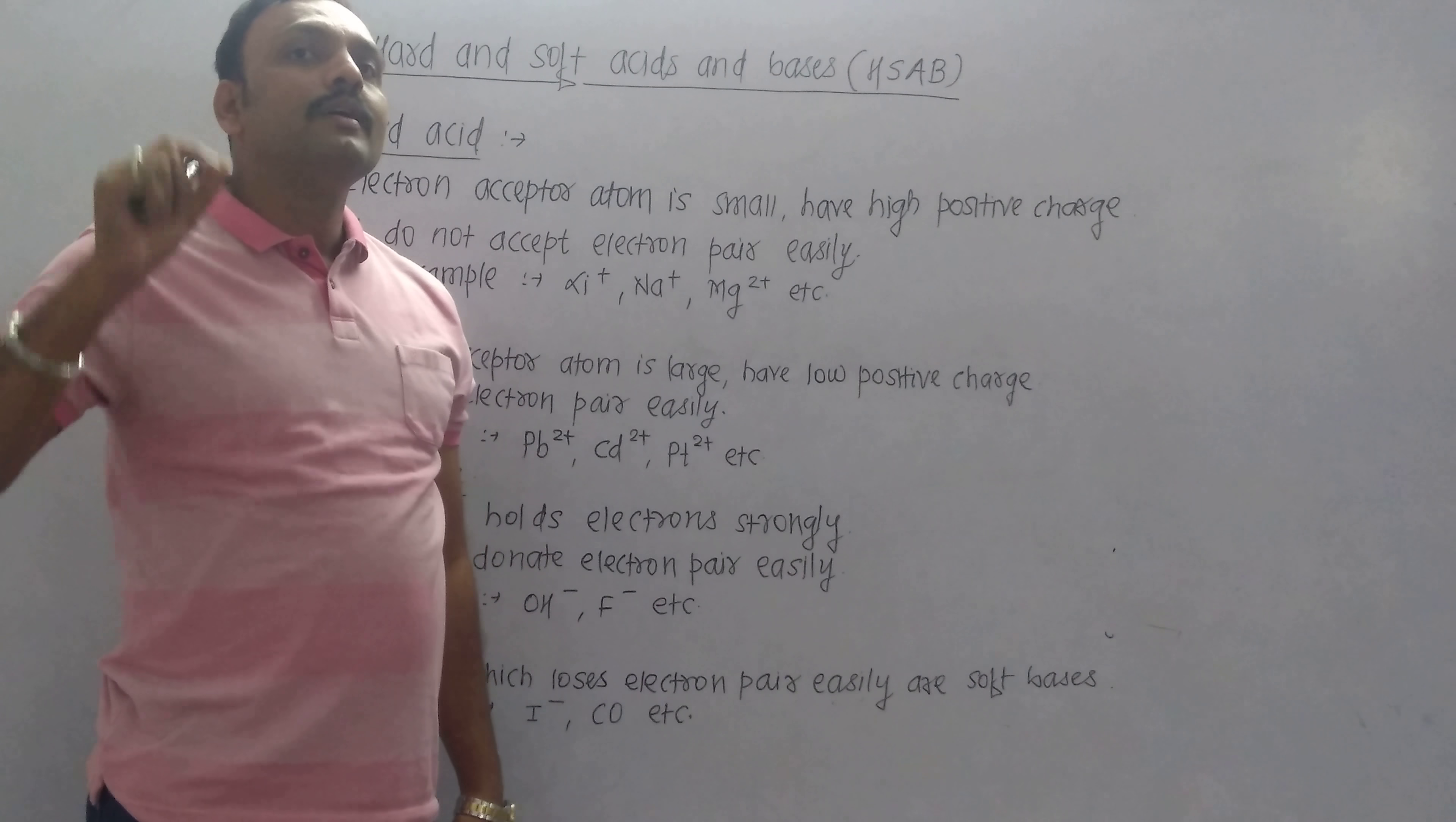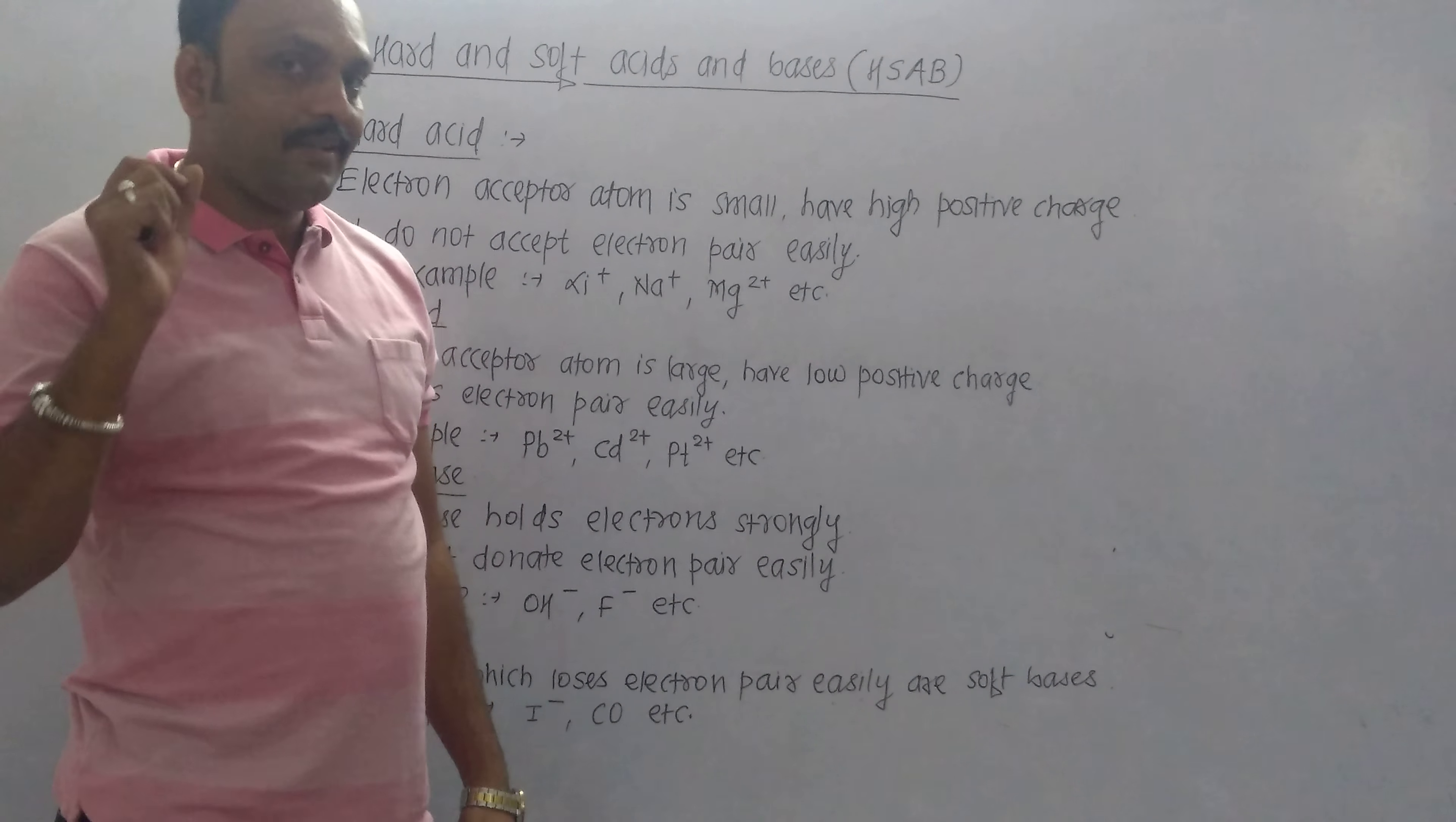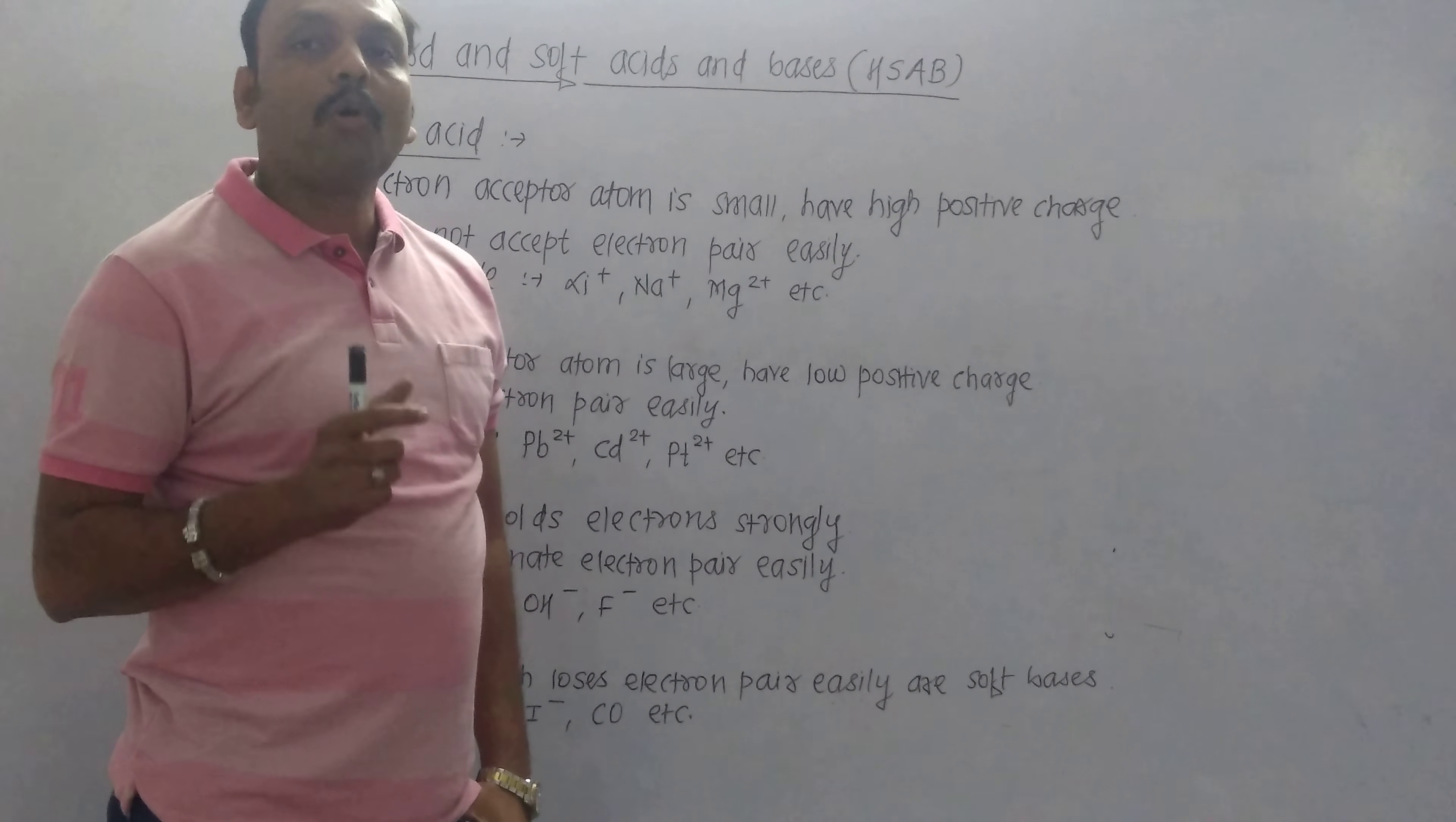Generally, complexes formed from hard acids and hard bases contain ionic bonding, whereas complexes obtained from the combination of soft acids and soft bases possess covalent bonding.